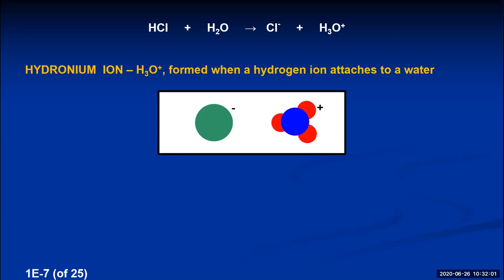The H₃O⁺ ion is known as the hydronium ion — formed whenever a hydrogen ion attaches to a water molecule. In this reaction, HCl acts as an acid because it donates a hydrogen ion to water. What is the water doing? It is accepting that hydrogen ion, which is the definition of a base. So whenever an acid reacts, there must be a corresponding base accepting the hydrogen ion.